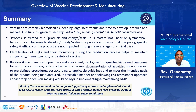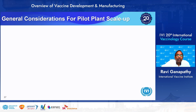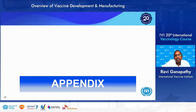In summary: vaccines are complex biomolecules requiring large investments and time to develop. They are given to healthy individuals, needing careful risk-benefit considerations. Process is treated as a product, and changes in scale-up are mostly not linear or symmetrical, making it a challenge to develop, modify, or scale up a process while proving that purity, quality, and safety are not impacted through several stages of clinical testing. Identification of CQAs and monitoring during production helps maintain antigenicity, immunogenicity, and safety. The final goal of development and manufacturing pathways should be to have a robust, scalable, reproducible, cost-effective process that produces a safe, effective vaccine following GMP regulations.